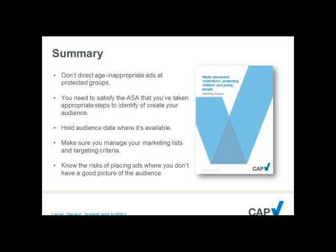Just to let everybody know where the guidance we've been talking about today will be available: on asa.org.uk, the advice and resources tab — search for 'media placement restrictions: protecting children and young people', which is the title of the guidance. When we publish the interest-based targeting guidance next month, that will also be there.